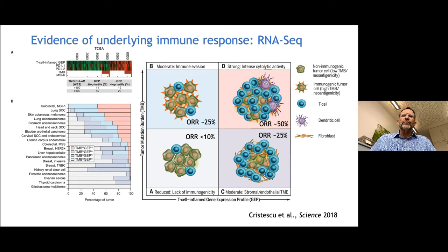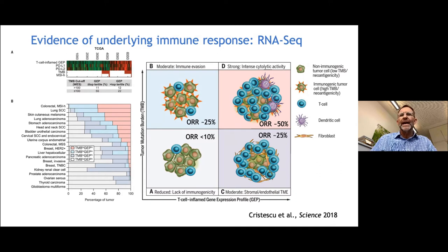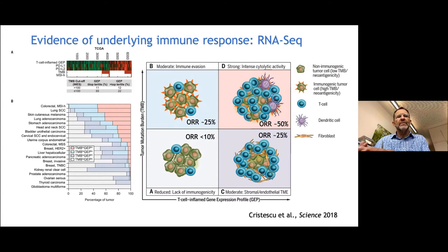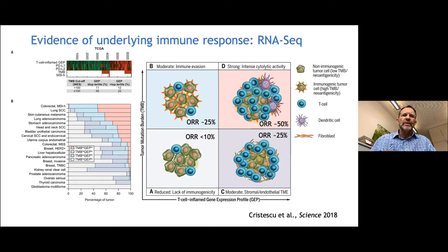We've also learned that looking at microsatellite instability provides a quite significant biomarker tool to select certain treatments independent of the organ of origin. So we are now looking at microsatellite instability not only in GI cancer, but also in gynecological cancers and other types, because we've realized that the molecular profile influences the immune state of those tumors and their responsiveness to checkpoint inhibitors and other immune-stimulatory agents. It's not necessarily the tissue of origin or where a tumor spreads during metastasis — it's also the combination of its underlying genetic treatment and influencing factors from the outside.